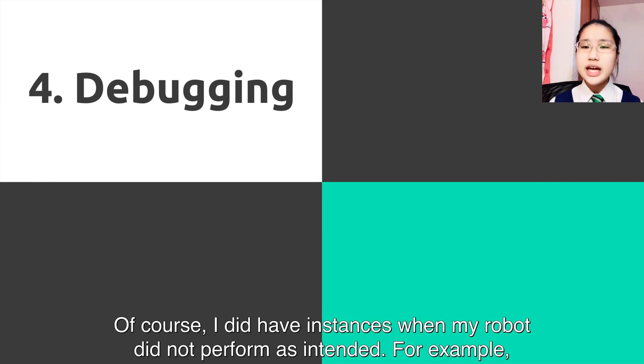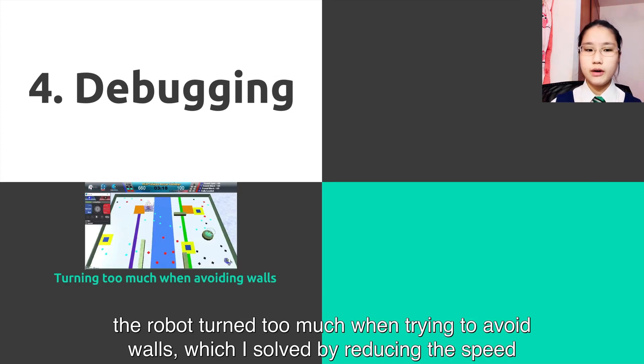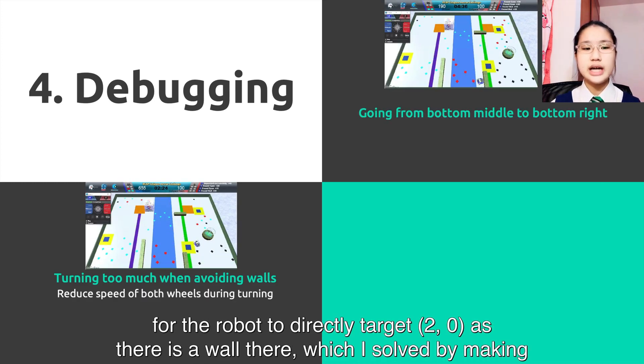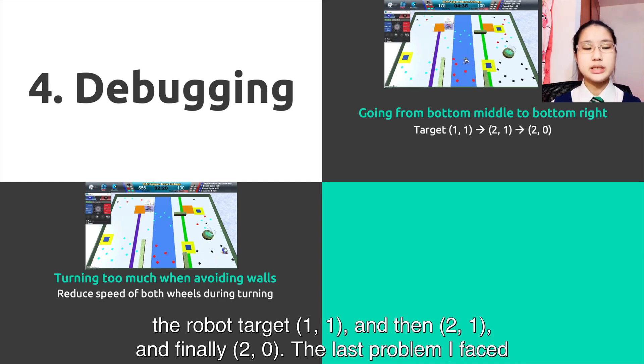Debugging: Of course, I did have instances when my robot did not perform as intended. For example, the robot turned too much when trying to avoid the walls, which I solved by reducing the speed of both wheels during turning. Another issue was going from 1-0 to 2-0. It was hard for the robot to directly target 2-0 as there's a wall there.